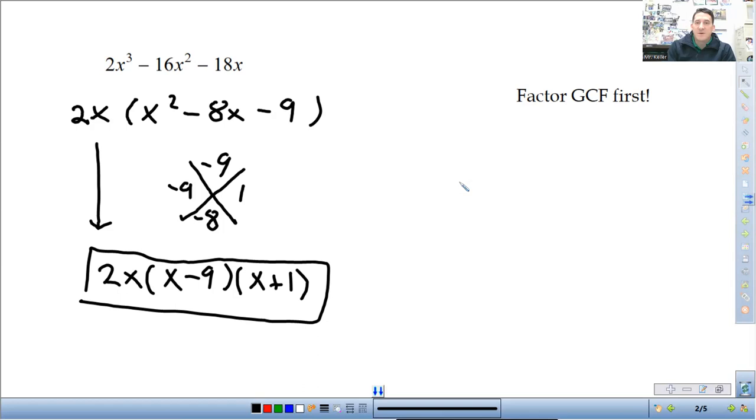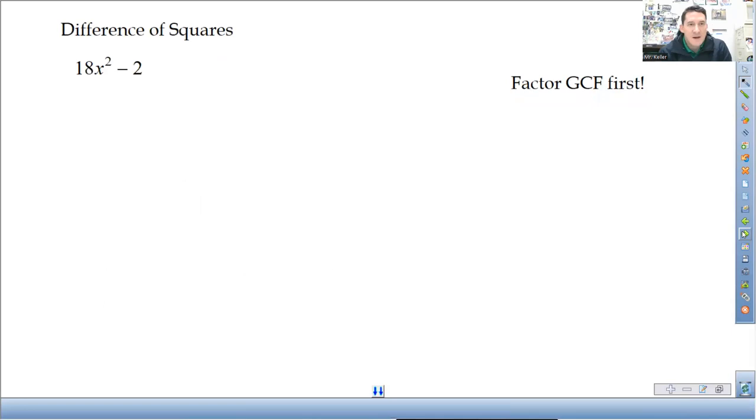That is it factored completely. So, you have to do a greatest common factor first. And then, factor what's left over. Let's just do another example.